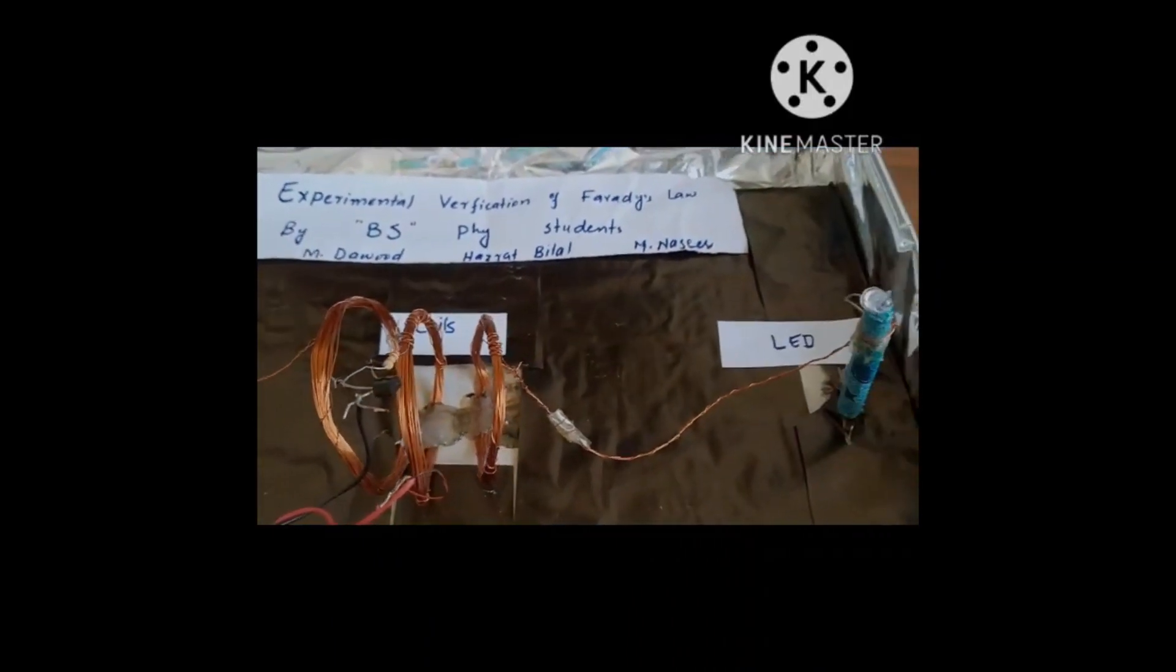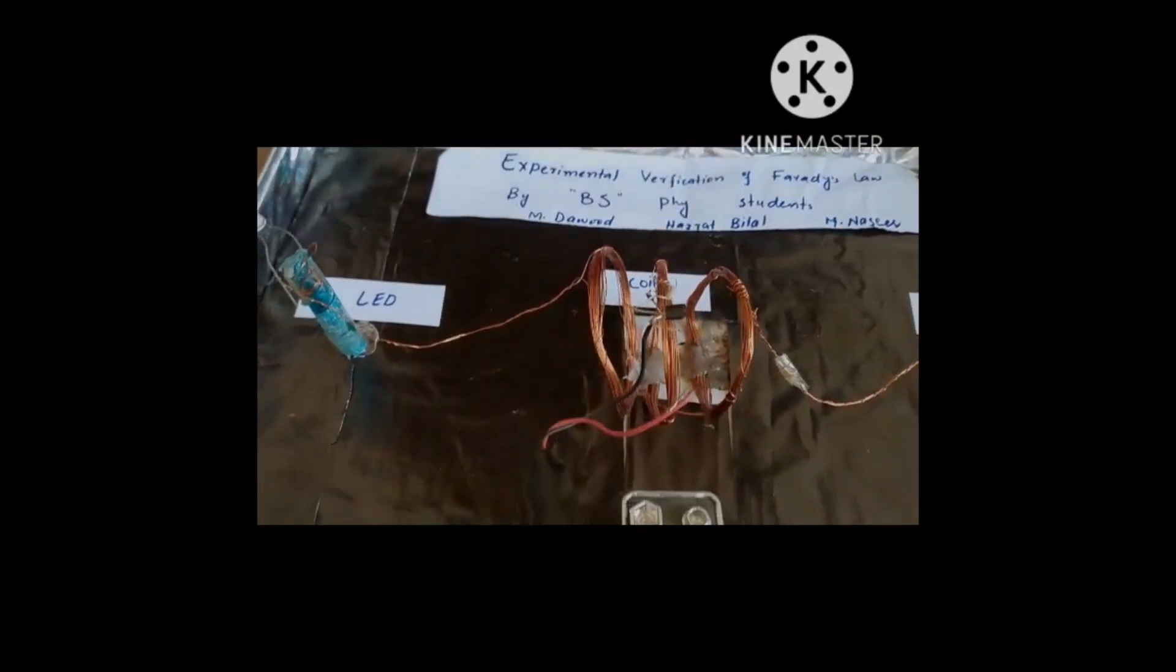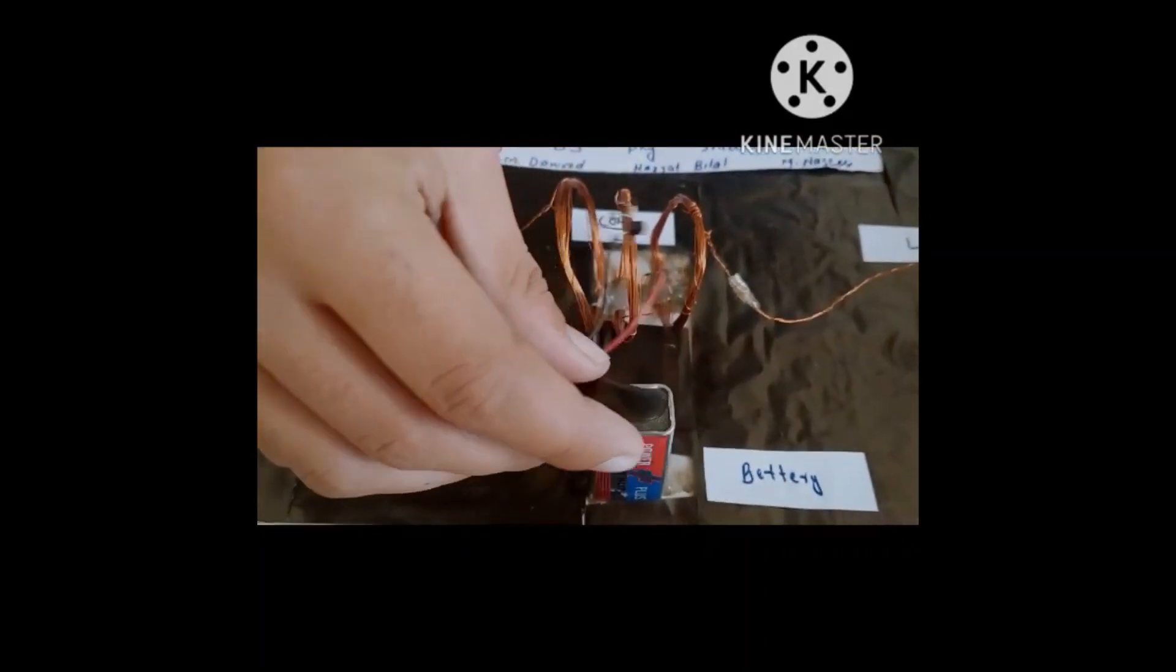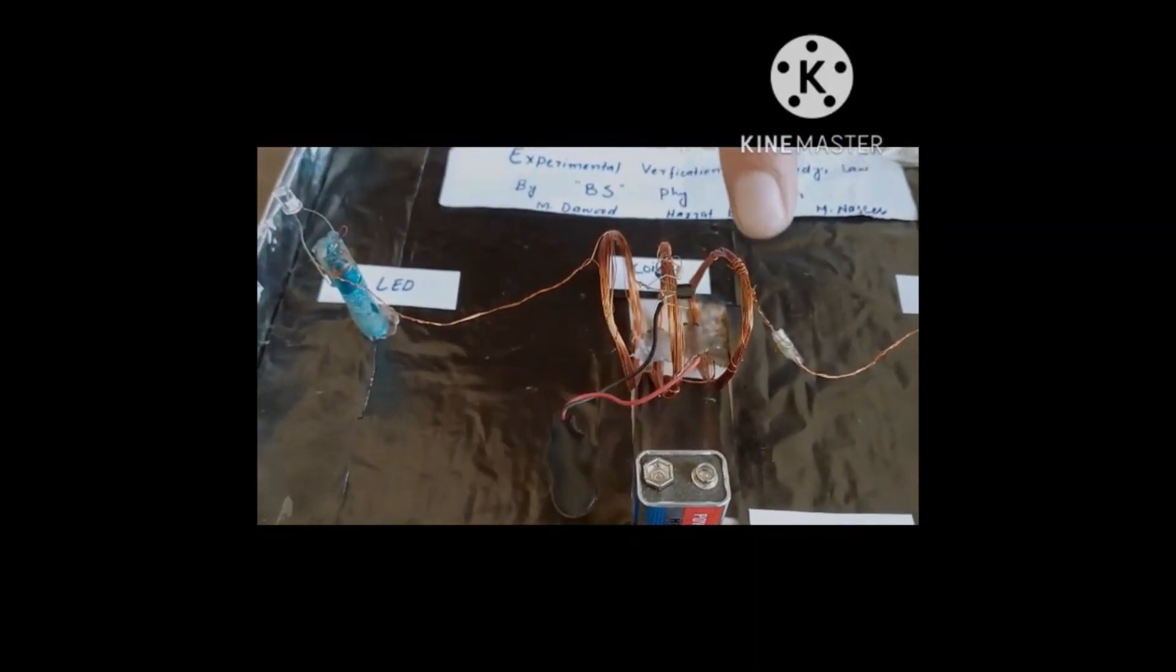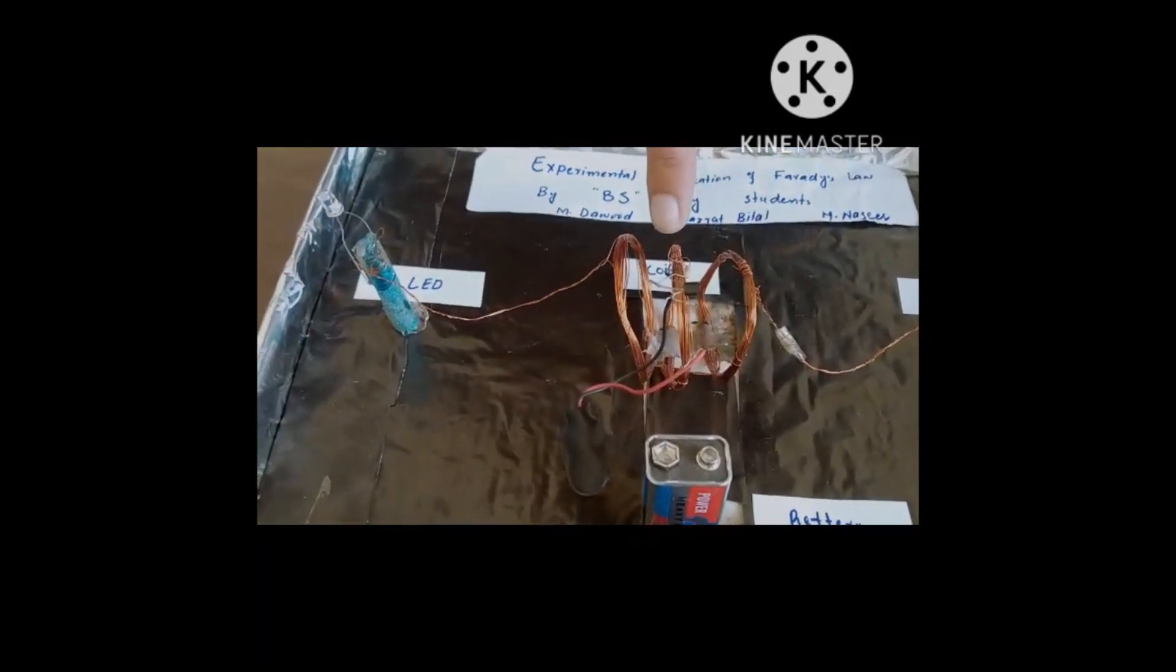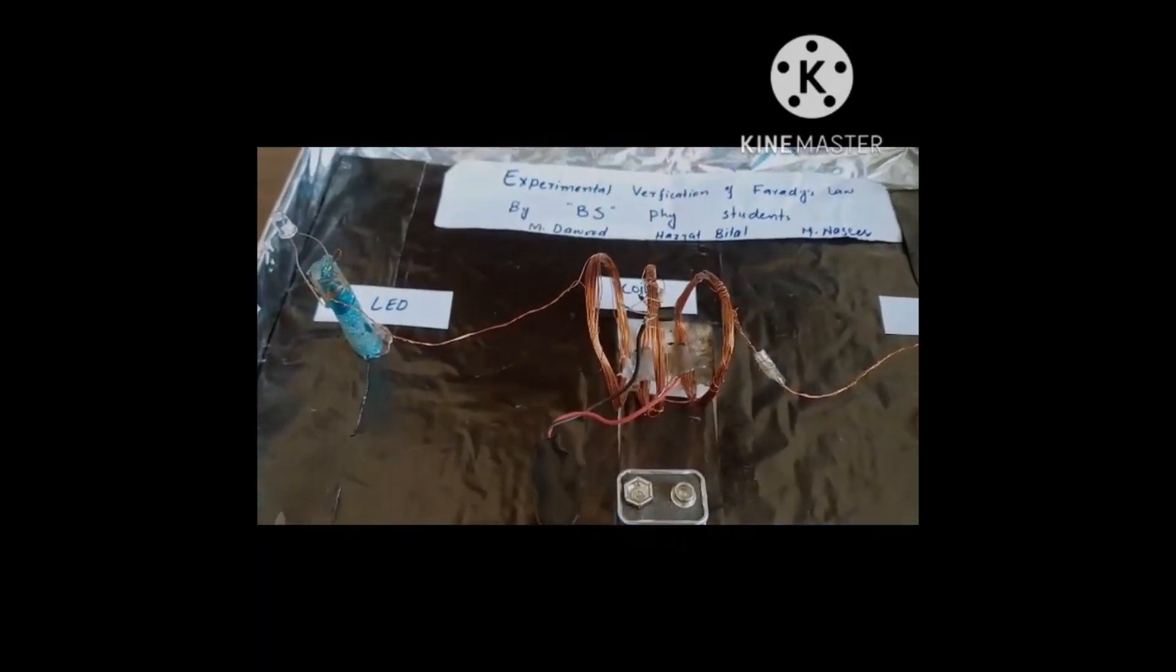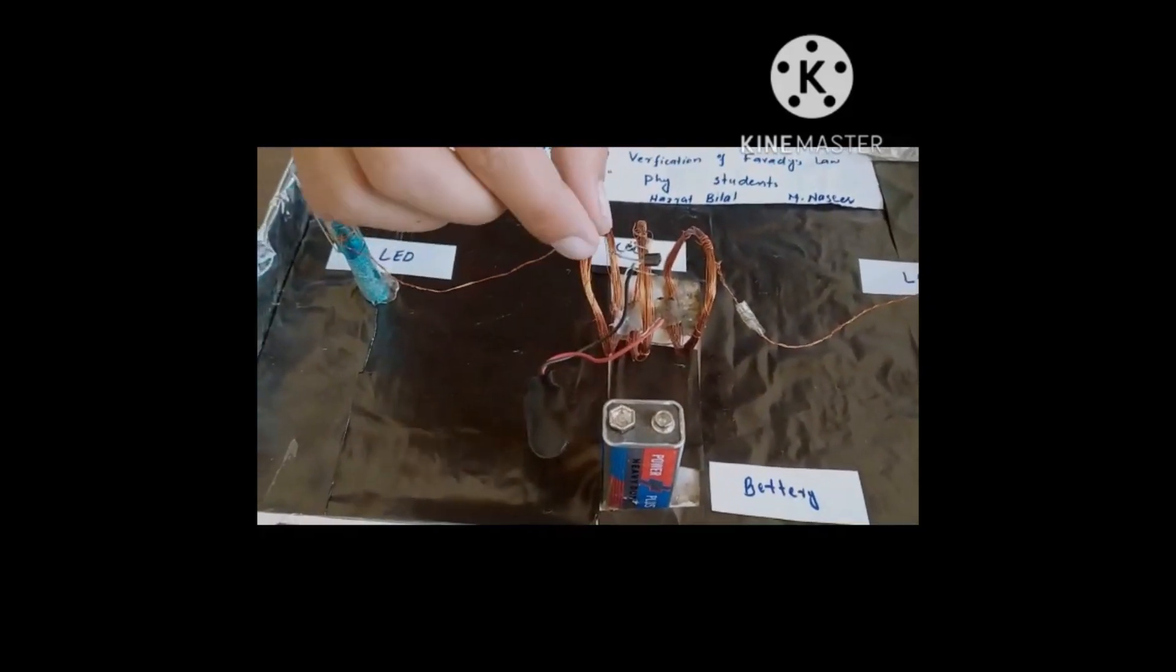This is the experimental verification. So this is the primary coil, which we have connected with the battery. This is a 9-volt battery. We will create a small circuit.